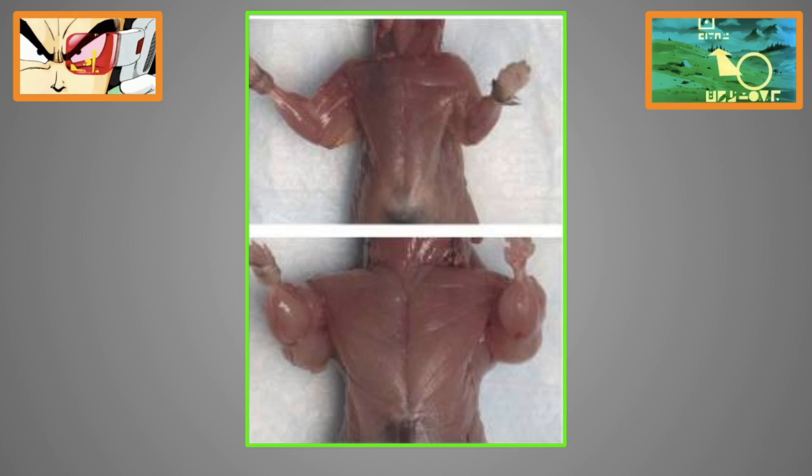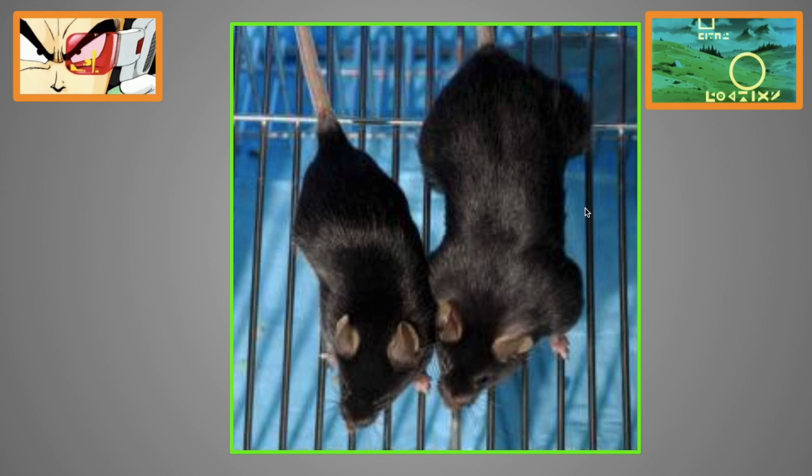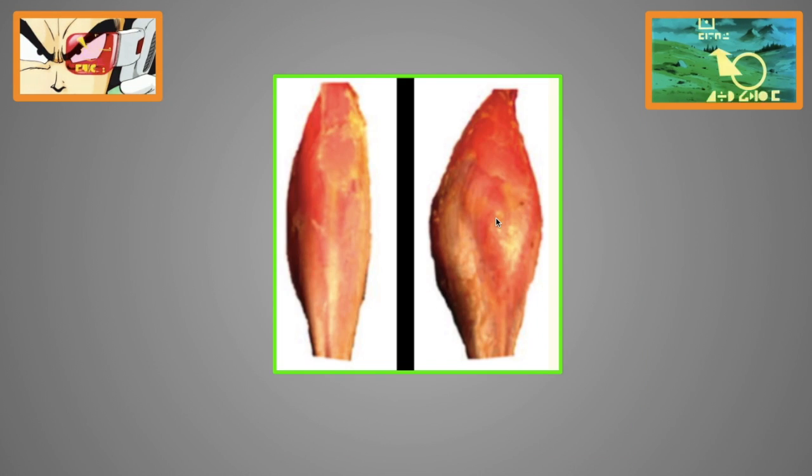And once again, normal levels of testosterone, normal levels of androgens—it is so massive it's not even funny. And here's what the rat looks like when it's actually alive, straight bodily dwarfing the other rat. This is lean muscle as well, extremely low levels of body fat.